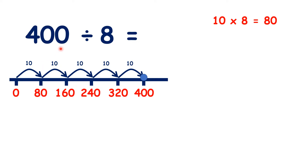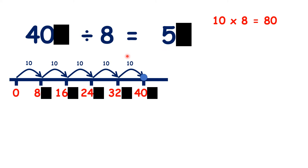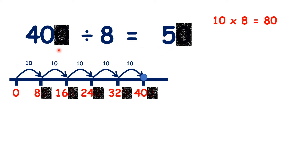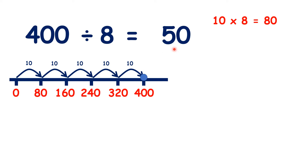So 400 divided by 8 is 50. And if we know that 40 divided by 8 is 5, we know that 40 tens — so 400 — divided by 8 is 5 tens. So 400 divided by 8 is 50.